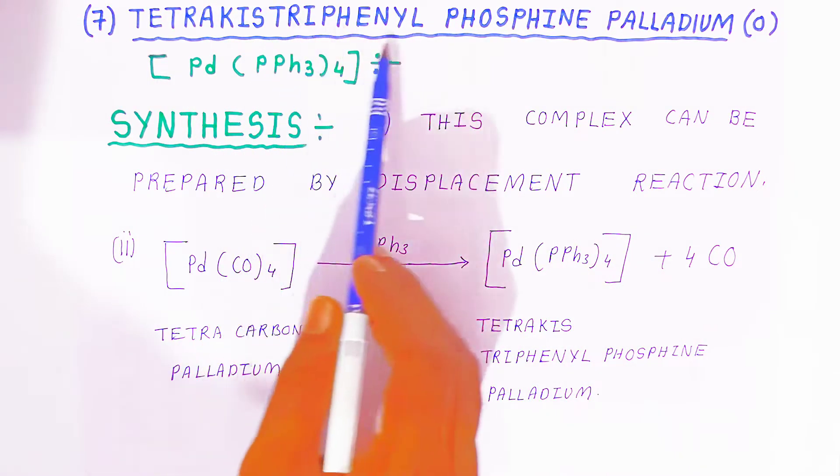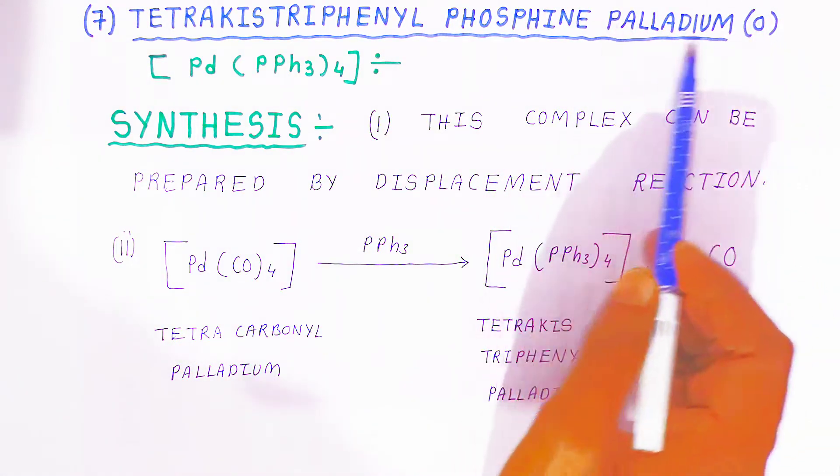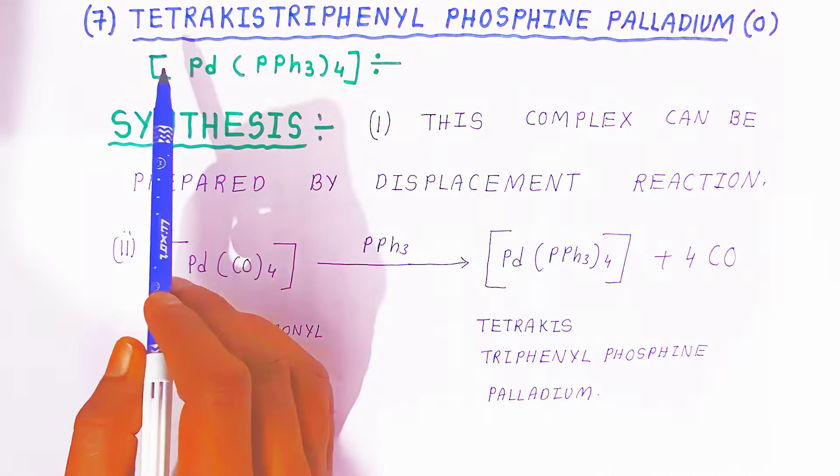This is called tetrakis triphenylphosphine palladium zero. That means palladium will be at ground state, so this is the tetrakis triphenylphosphine palladium complex.